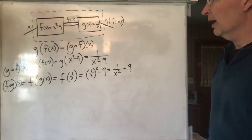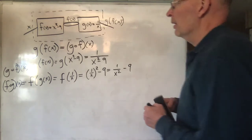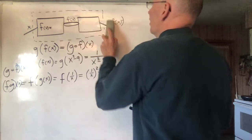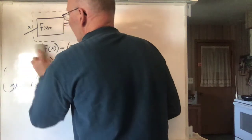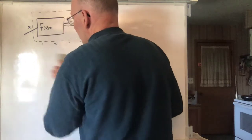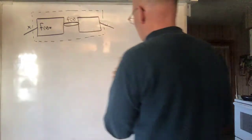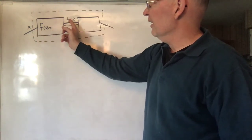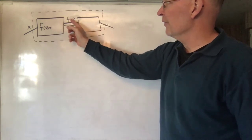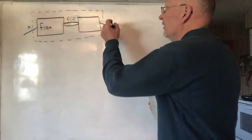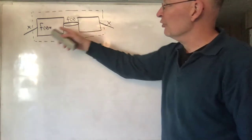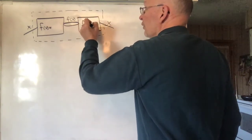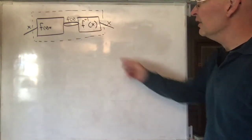That's composition of functions, and that's all there is to it. Now let's take this and run with it a little bit. Given a function F, what function would undo what F does? I want a function that: you put X into F, this thing gets spit out, goes into this function, and this function takes F of X and spits out the original X again. It turns out there's only one such function, and we call it F inverse.